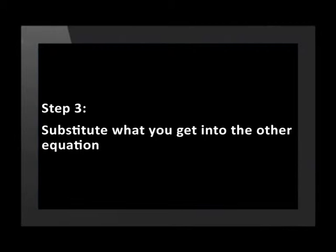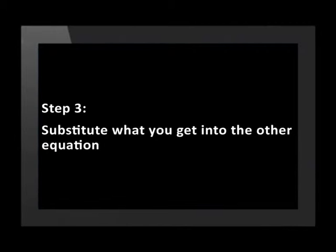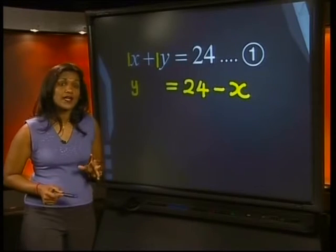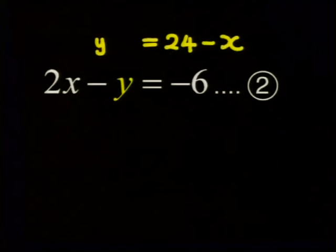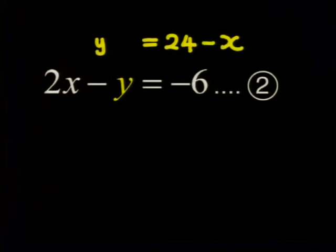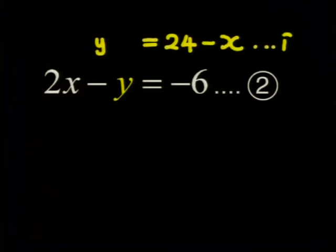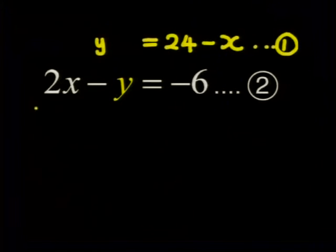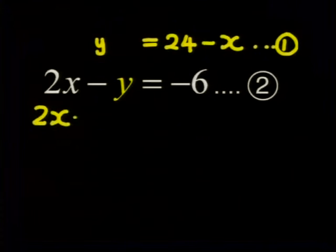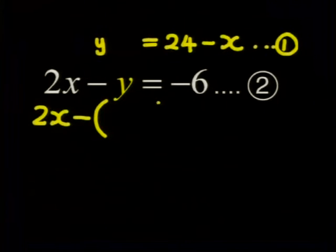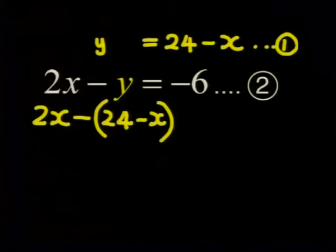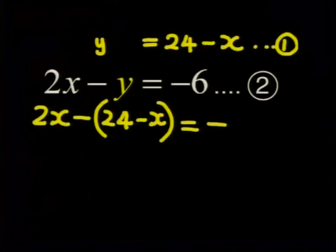Now for the third step: Substitute what you get into the other equation. So in this example, we need to substitute what we got for y into the other equation. Do you remember that we wrote the first equation in terms of y? So we need to substitute for y in the second equation. We get 2x minus (24 minus x) equals minus 6.